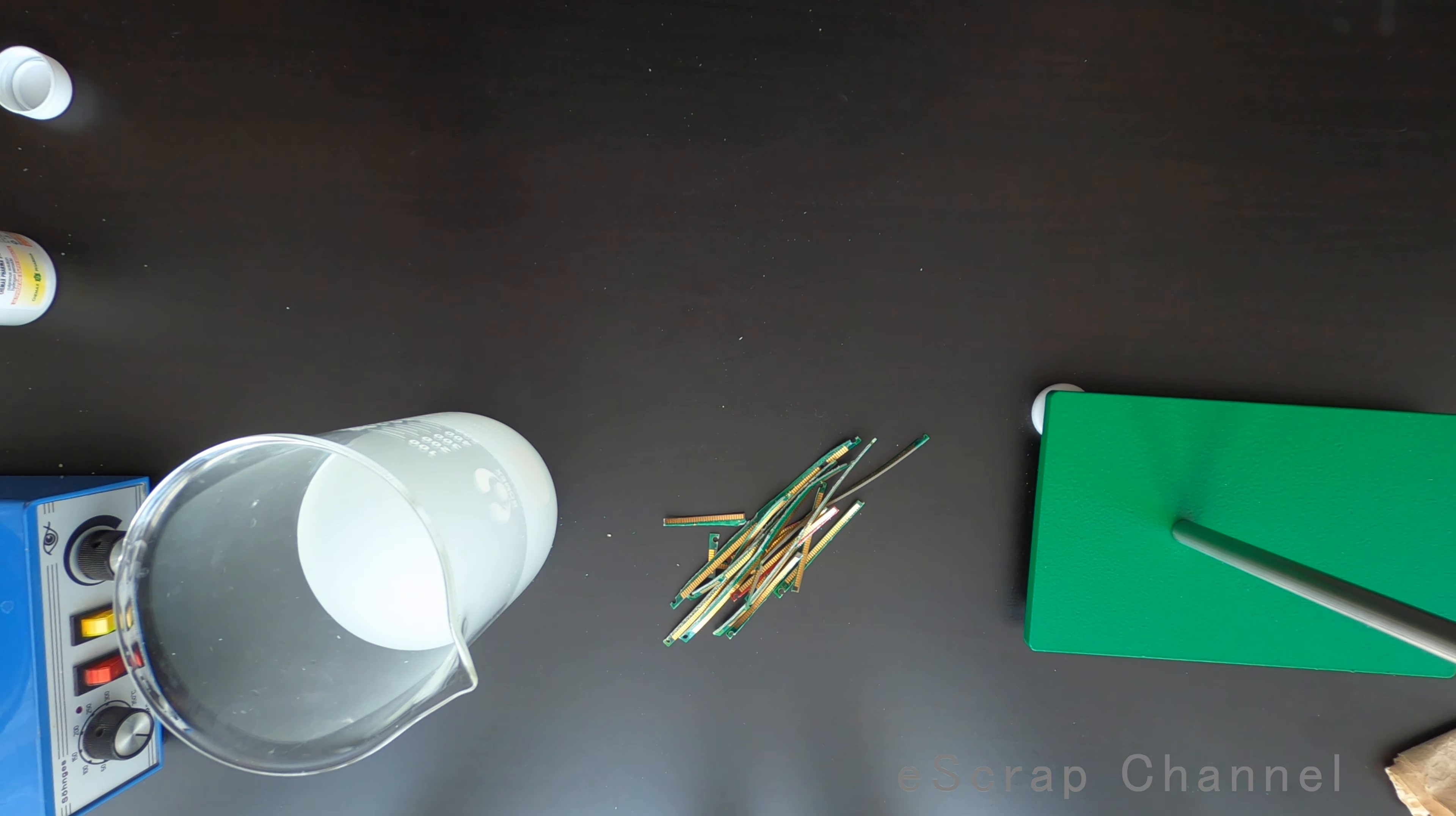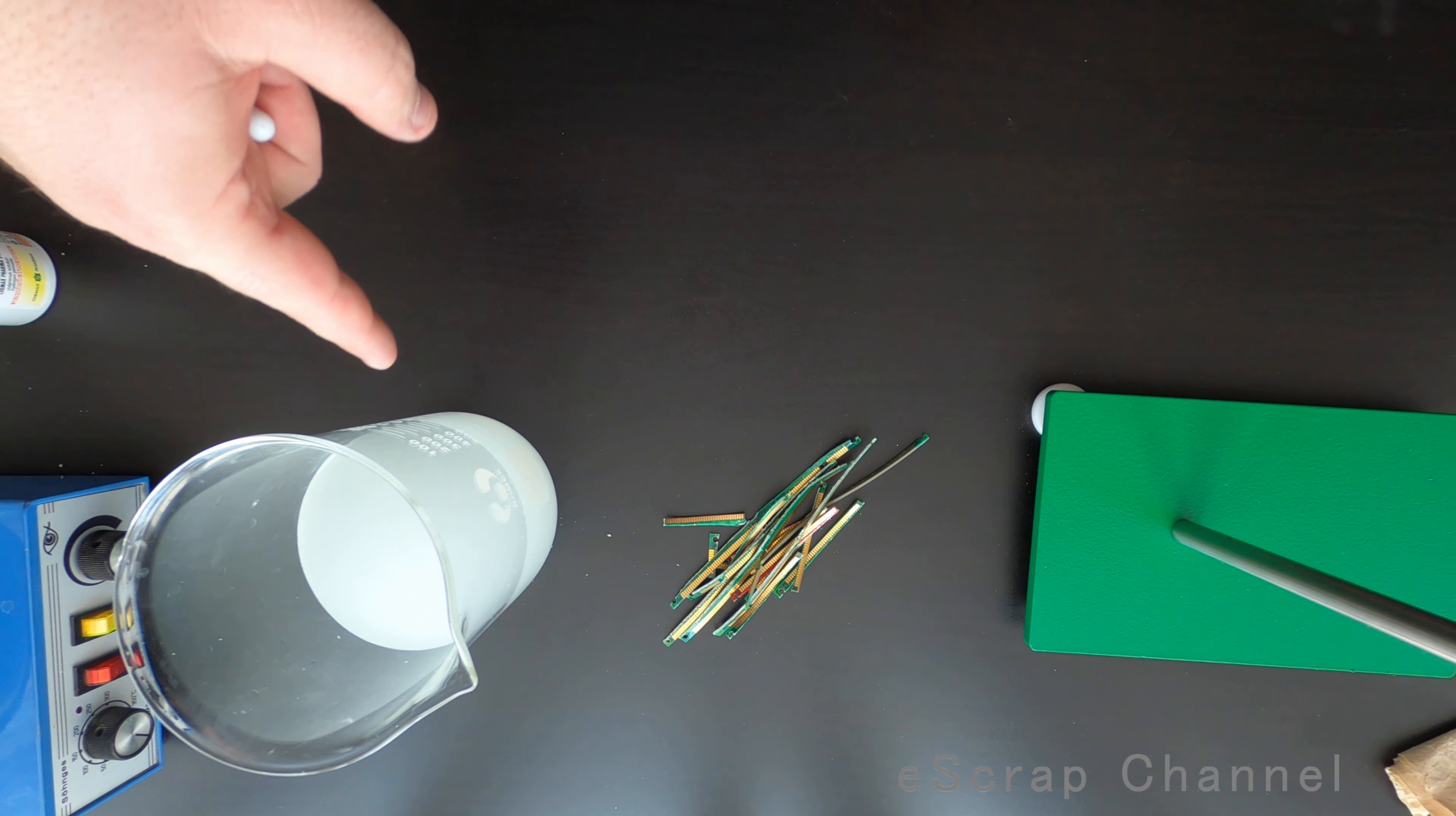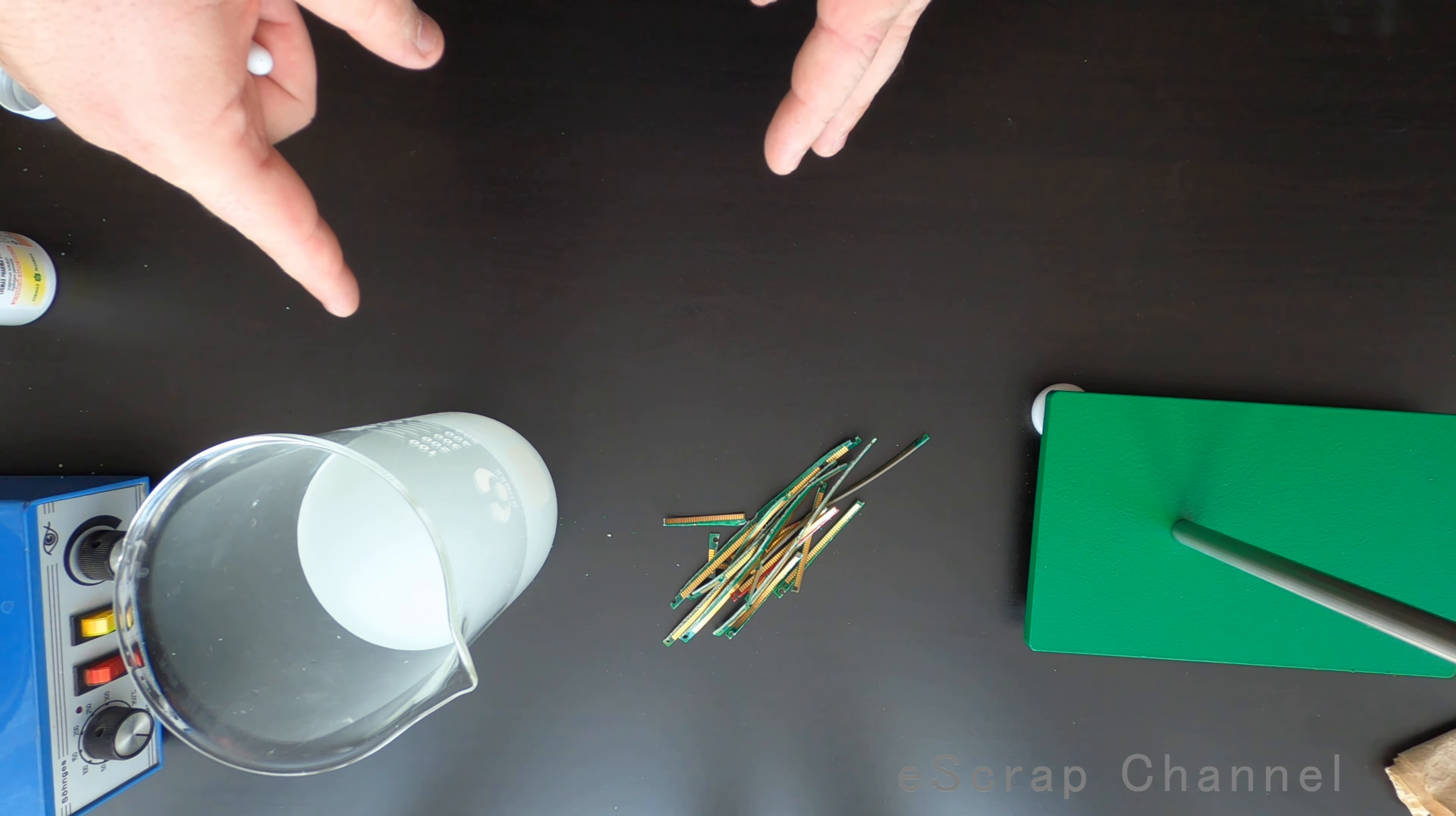The key here: citric acid is not easy to dissolve and I usually use my magnetic stirrer or I spend 10 minutes stirring this solution. I will stir this until it's clear and show you how the reaction starts.